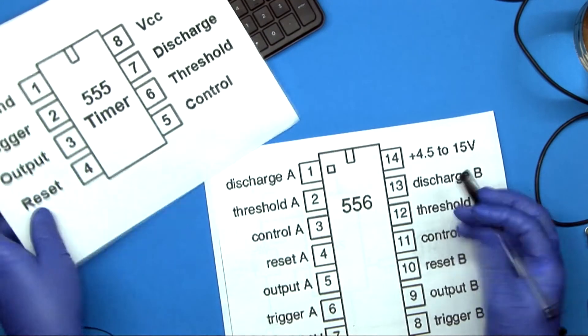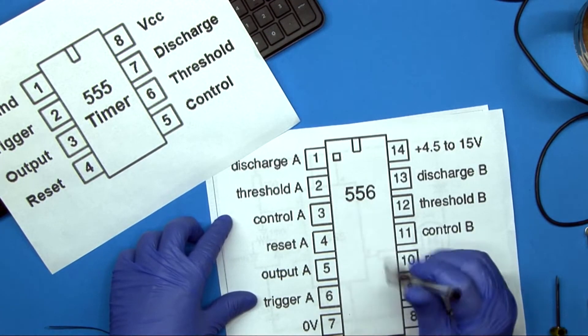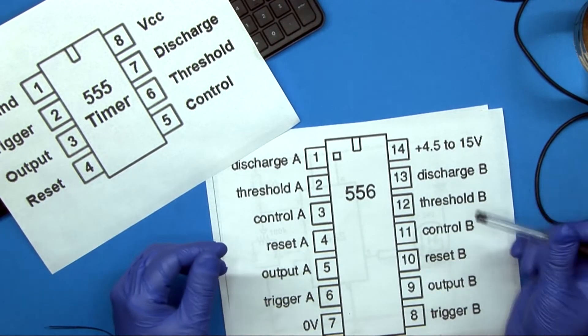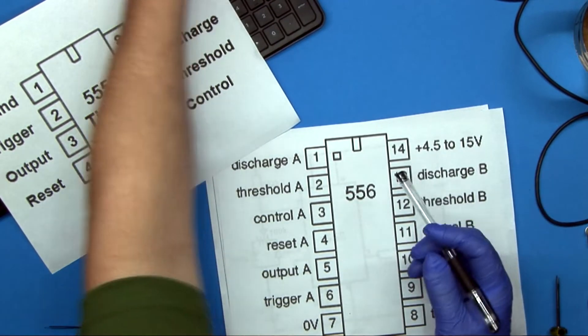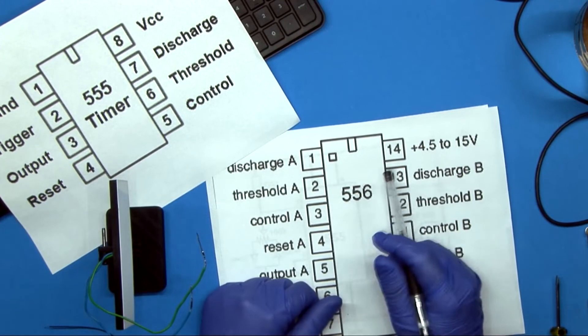This is the pinout for the 555 timer. And what I'm going to be using is a 556, because I'm going to be using a two-channel setup, because I have the lights overhead here, and I'm also going to have some light on the side here that I would like.